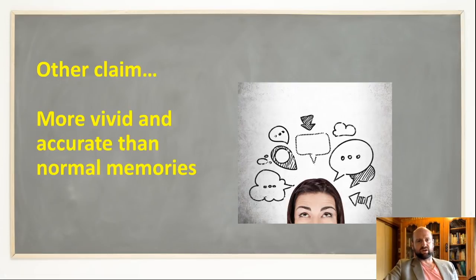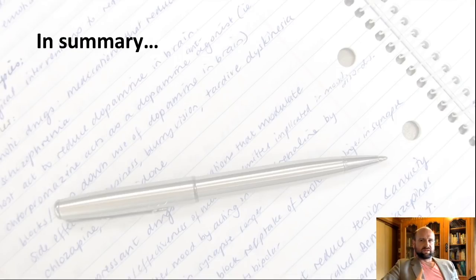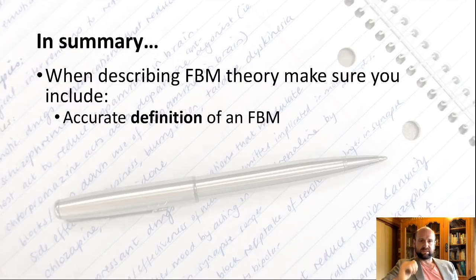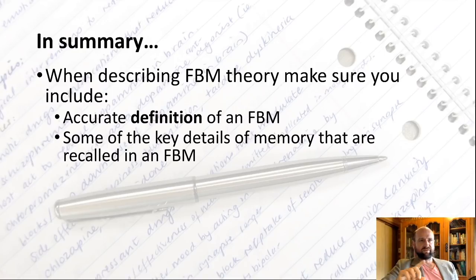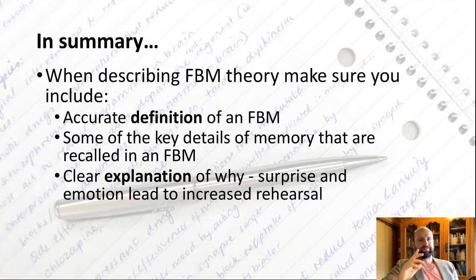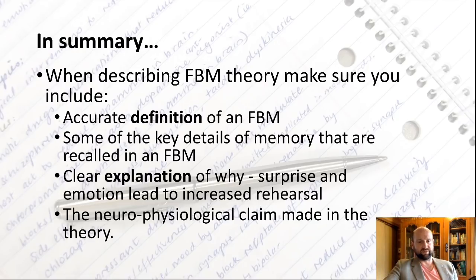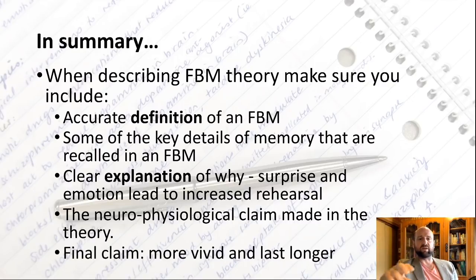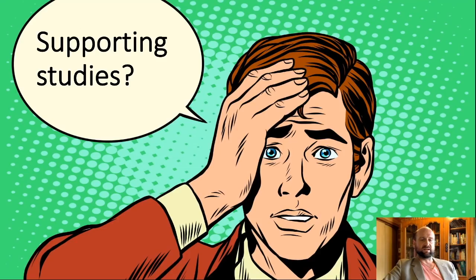The final claim of the original theory is that flashbulb memories are more vivid and accurate than regular memories — they are a different type of memory altogether. To summarize, if you're explaining flashbulb memory and how emotion affects cognition, include: the correct definition, the key components like place and informant and emotion, a clear explanation of why they're formed through rehearsal, the neurophysiological claim, and the final claim about vividness and duration.